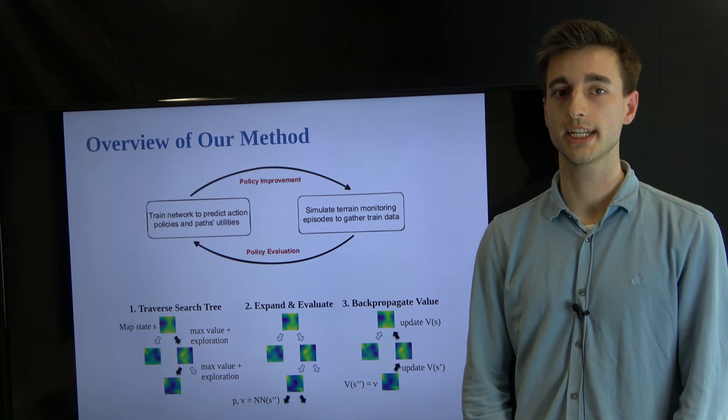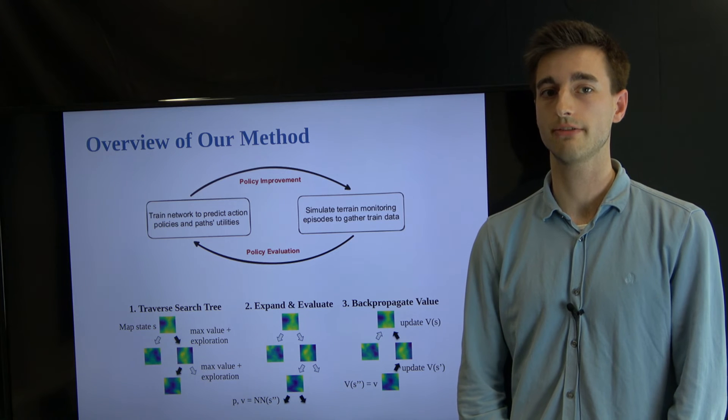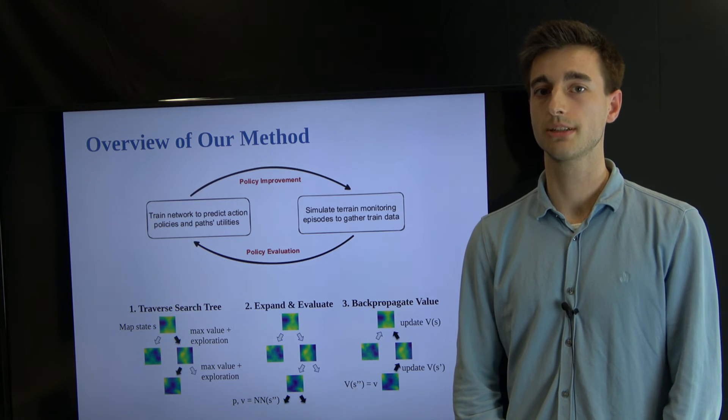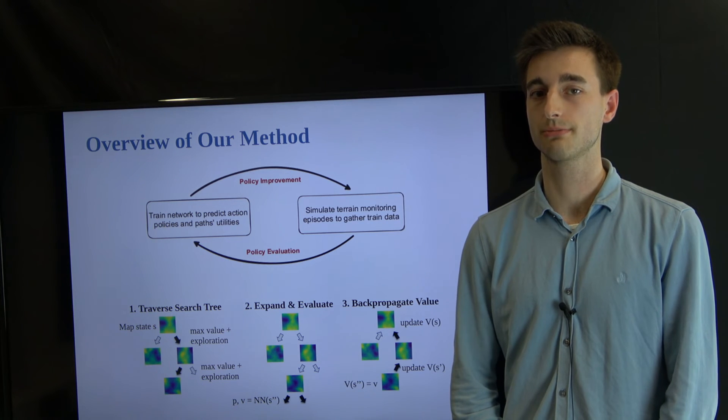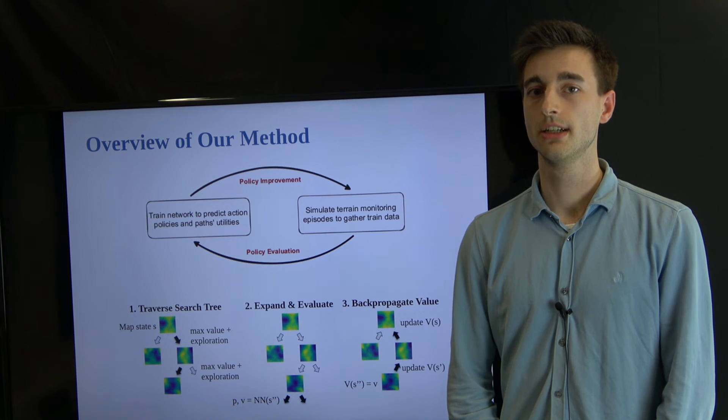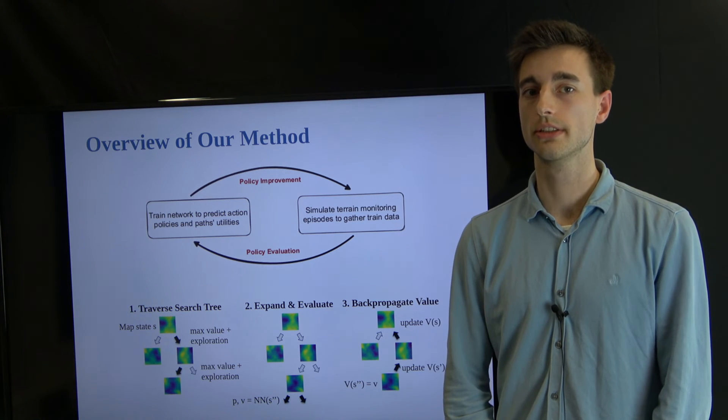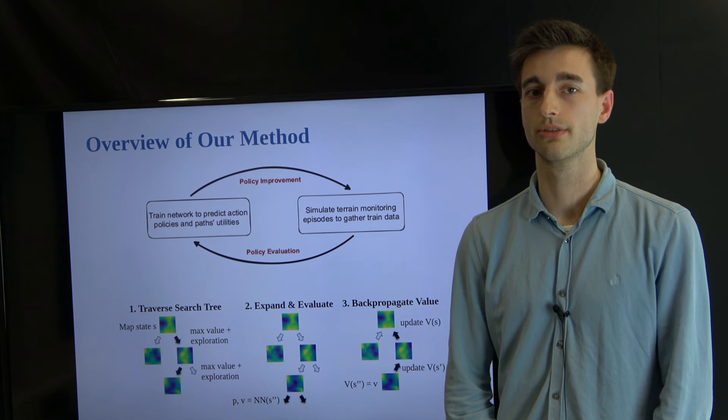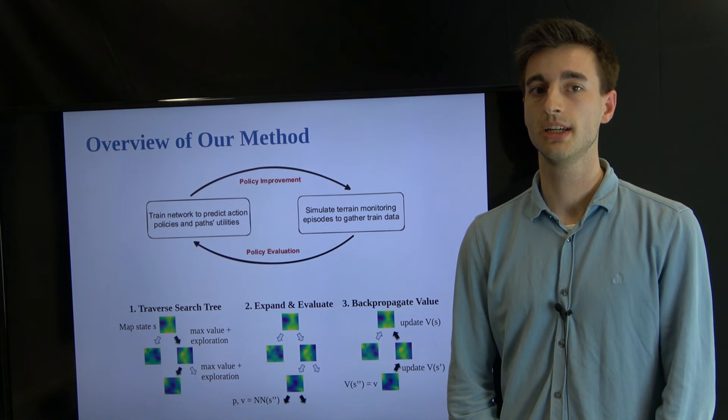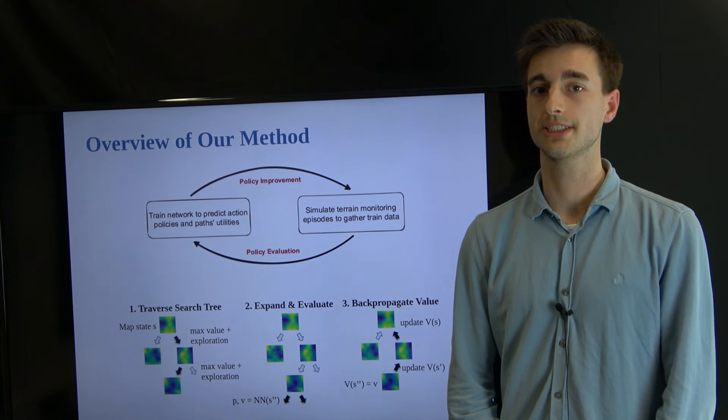At train time, we use a CNN to learn a policy and a value function, guiding a sampling-based tree search to find informative paths for data gathering. The CNN is iteratively retrained in simulation on newly generated episodes to improve the policy and value estimates. The episodes are generated by leveraging the CNN-enhanced tree search.